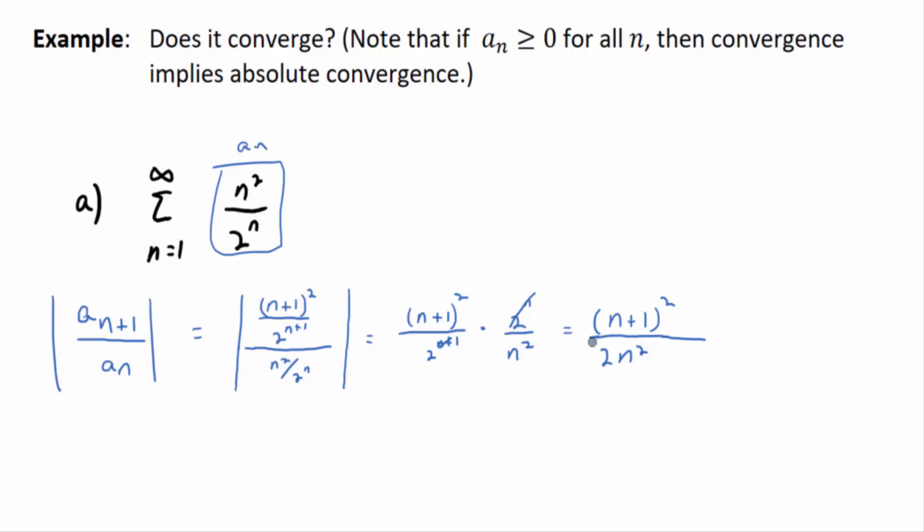All I wrote down was the ratio, A N plus 1 over A N, absolute values, in this case, don't matter, because everything's positive. And I simplified. All I've done is algebra so far. What does this guy converge to?